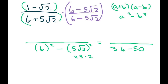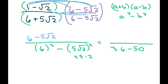For the numerator, that's the harder part, so we're going to do first, outer, inner, last. We're going to get 6, then the outer which is minus 5 square root of 2, then the inner which is minus 6 square root of 2, and the last — two negatives make a positive, and we're going to have 5 times 2, because square root of 2 times square root of 2 is just 2, so that's minus 10. Simplifying the numerator, we get 6 plus 10 is 16, and combining the square root of 2 terms gives minus 11 square root of 2.